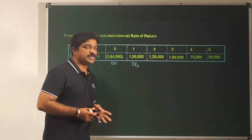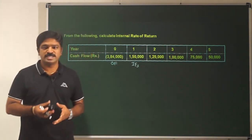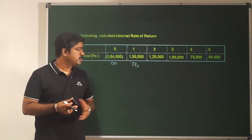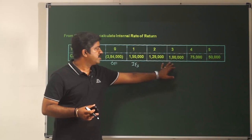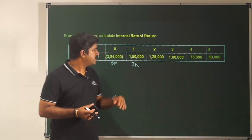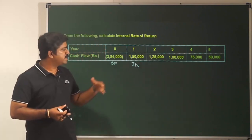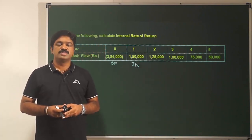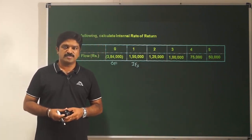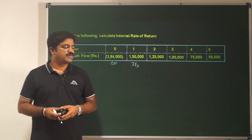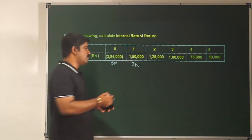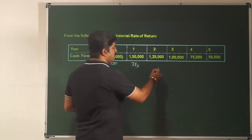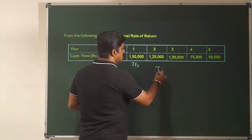The first question you have to ask is: what is the nature of the cash flow? Look at the cash flow — each and every year it is different. Actually, it is declining each and every year. So this is differential cash flow. In case of differential cash flow, how will you find out IRR? Using the trial and error method.